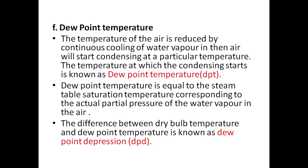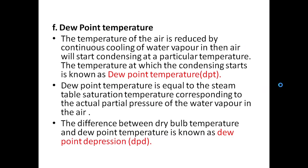Dew point temperature is the temperature at which dew drops appear on cold surfaces. When air is cooled, at some stage water vapors begin to condense, forming dew drops — that is the dew point temperature. The difference between dry bulb temperature and dew point temperature is known as dew point depression, similar to wet bulb depression.